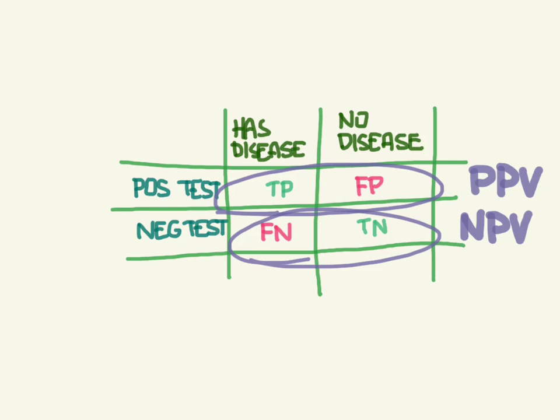We call those the positive predictive value and the negative predictive value. So you can see we're now calculating horizontally across the table, whereas sensitivity and specificity were calculated vertically.